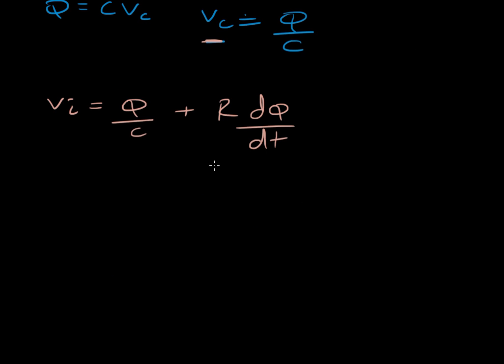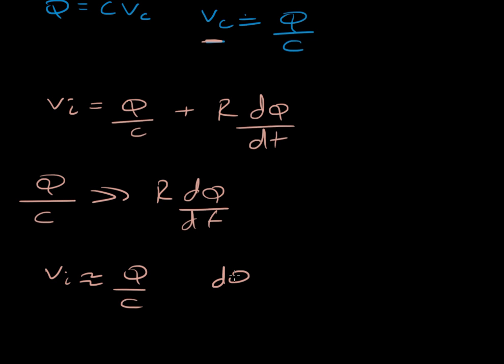Now I'm going to make one assumption. I'm going to assume that C and R are quite small. If that is the case, I can then also assume that the first term is much bigger than the second term, so much so that I'm going to assume that Vi is roughly equal to Q over C. Now I'll rearrange this and then differentiate with respect to time, so that dQ/dt equals C times dVi/dt.